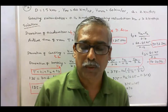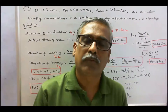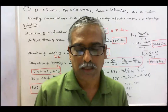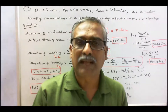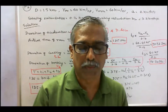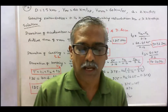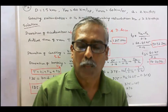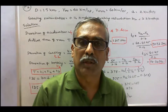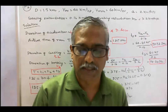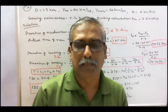Problem 2: A train is required to run between two stations 1.5 km apart at an average speed of 40 km per hour. The run is to be made using a simplified quadrilateral speed-time curve. The maximum speed is limited to 60 km/h, acceleration to 2 km/h/s, coasting retardation to 0.16 km/h/s, and braking retardation to 3.2 km/h/s. Determine: (A) duration of acceleration, (B) coasting period, and (C) braking period.